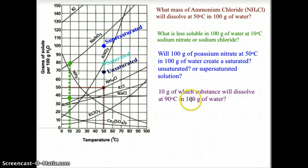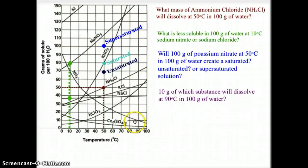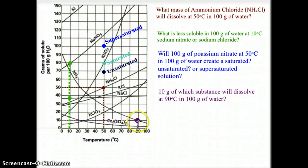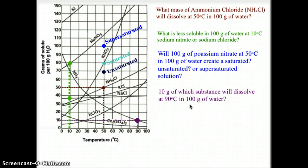The fourth example: 10 grams of which substance will dissolve at 90 degrees Celsius in 100 grams of water? Going to 90 degrees Celsius and running the line up to the curve that meets at 10 grams, we find that curve is ammonia, NH3. So the answer is ammonia, NH3.